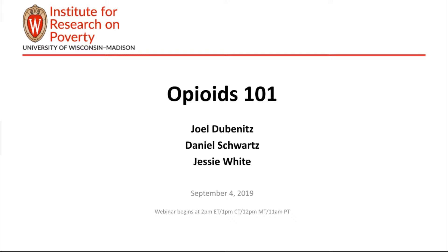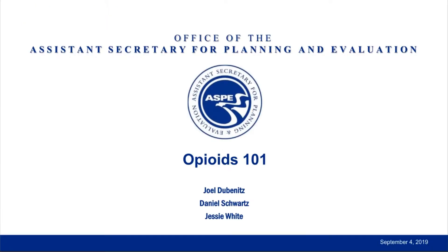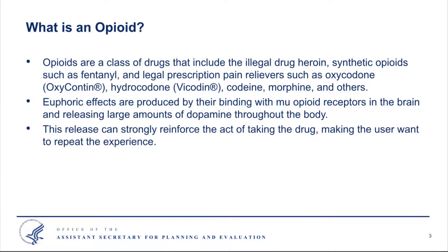This is Jessie White, and I'll be spending the next few minutes providing a broad overview of opioids — what they are, how they affect the brain — as well as a brief summary of the epidemiology of the crisis. So what is an opioid? Opioids are a drug class that includes both legal prescription pain medications as well as illegal drugs, including heroin and illicitly manufactured fentanyl and its analogs.